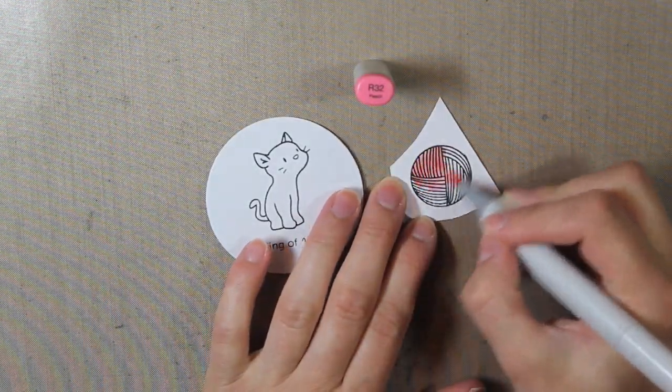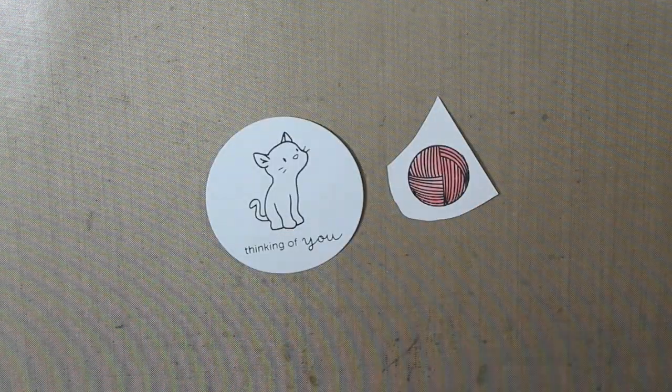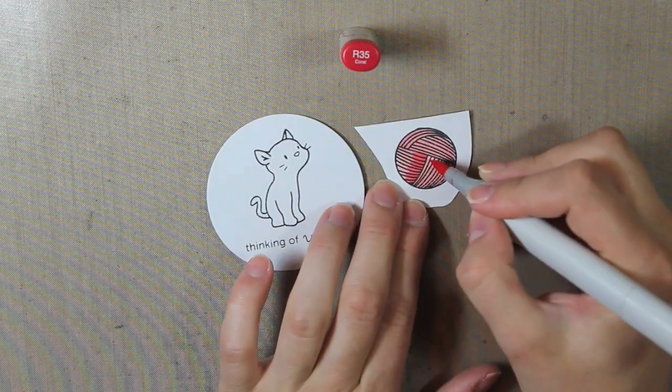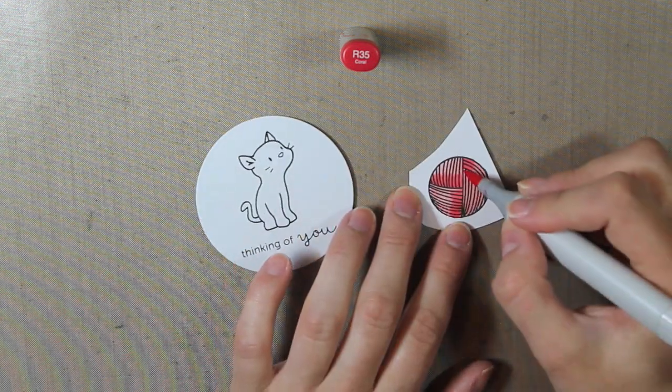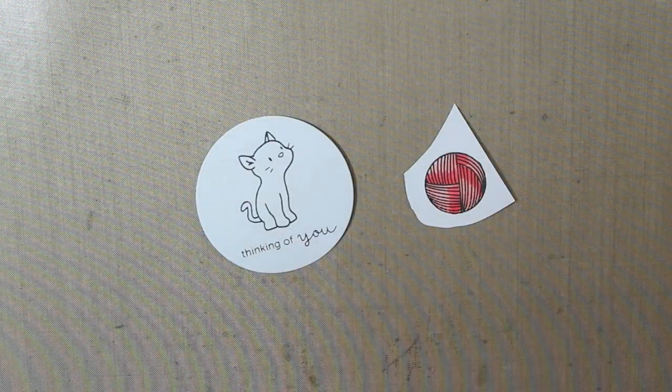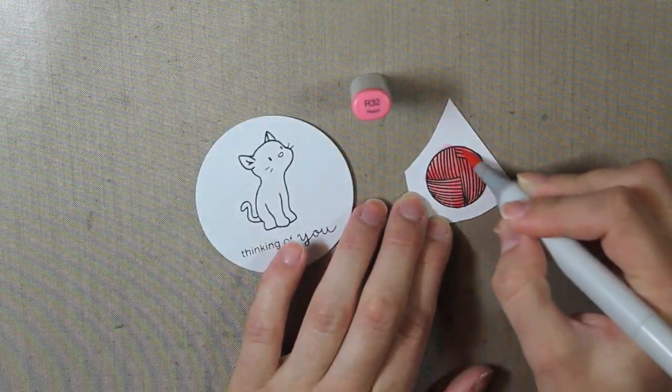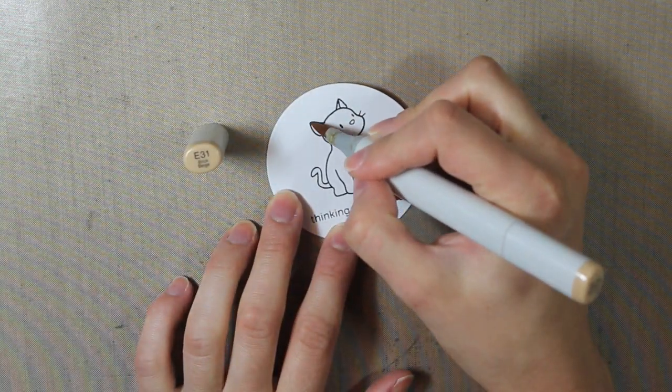But I'm just going to go ahead and quickly color this in with my Copic markers. I'm using a coral color to color in the little yarn ball. I'm just doing a little bit of shading with a darker color. And then I'll go back and blend that together with the original R32 that I used.